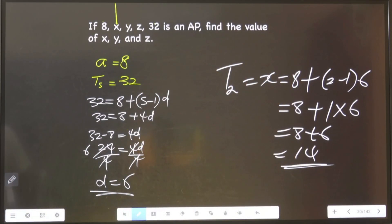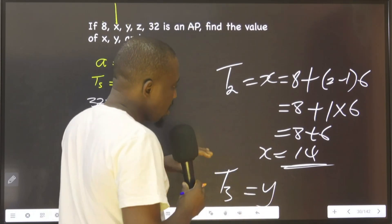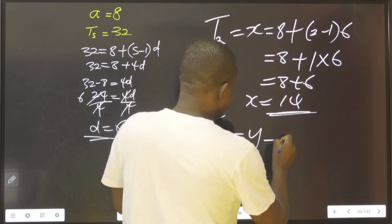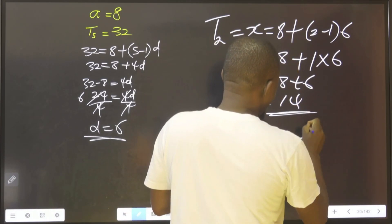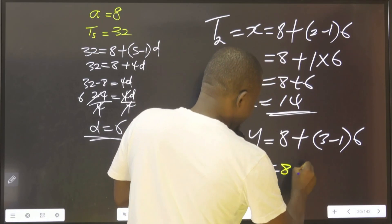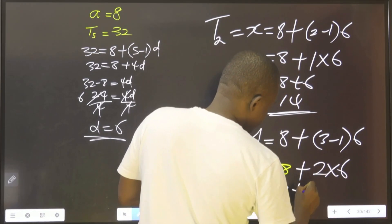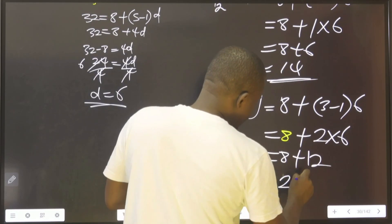That is the value of x. For the third term, which is y, we still put the first value, which is 8 plus 3 minus 1, we put 6 here. 8 plus 2 multiplied by 6, which is 8 plus 12. You agree with me that this is 20.